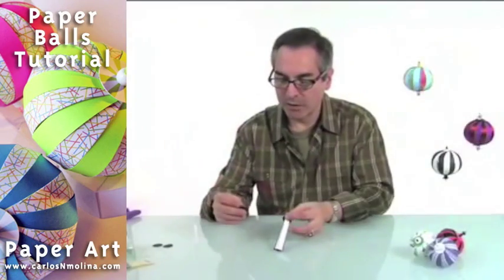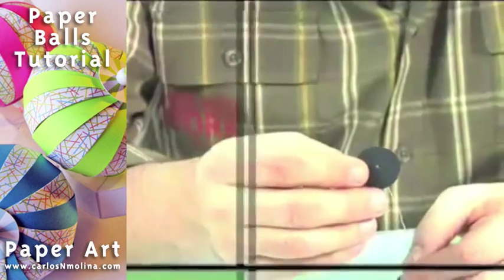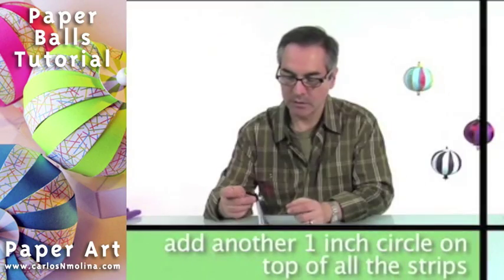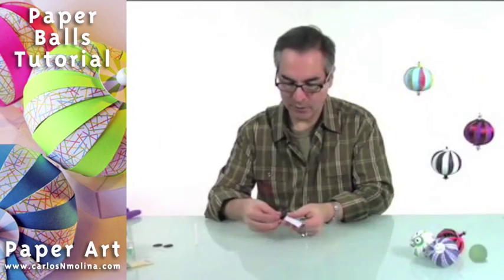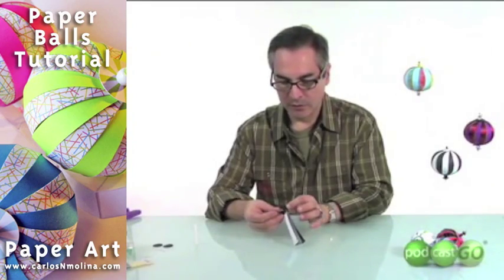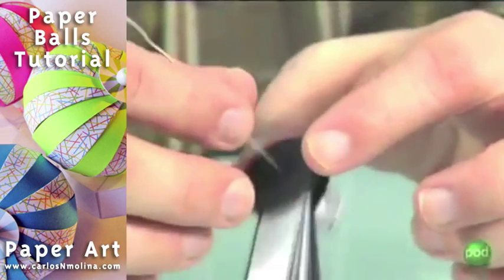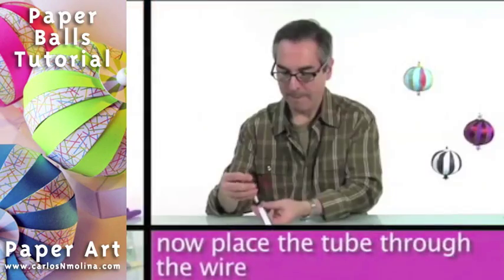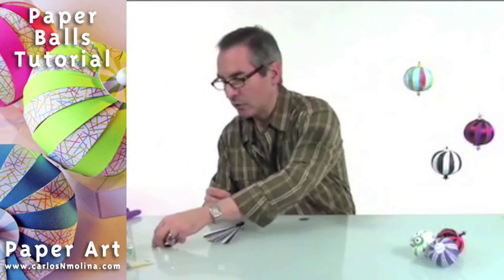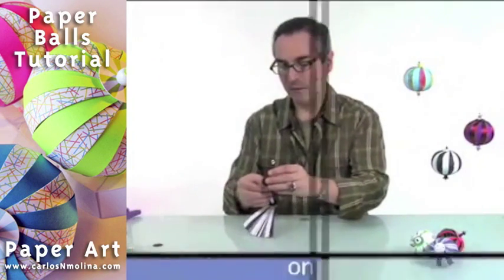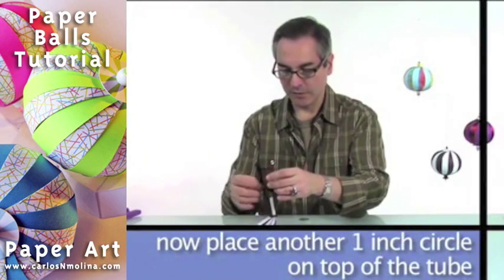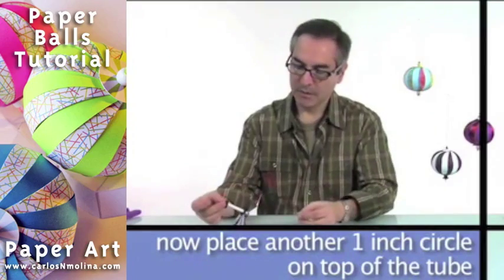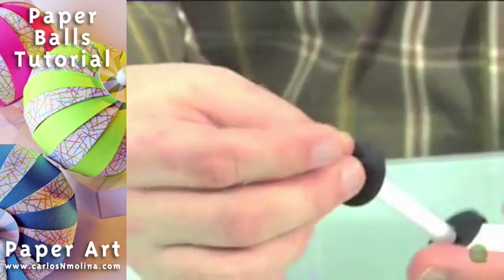Before we put the tube, we have to add another circle. So we have circle, strips, and another circle. Now we are ready for our little paper tube. And now we want to put another larger circle on top. So we get something like this.